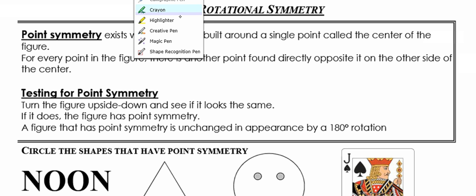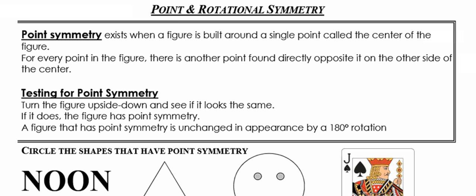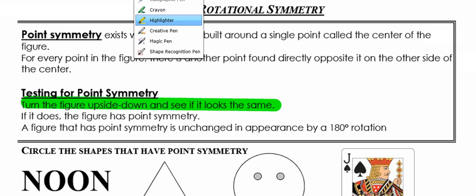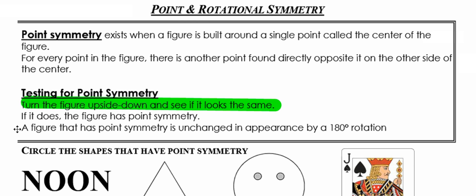How can you tell when a figure has point symmetry? If it's exactly the same upside down as it is right side up, then it has point symmetry. If it doesn't look exactly the same upside down as it is right side up, then there exists no point symmetry. Another fancy mathematical way to say it: a figure with point symmetry remains unchanged by a rotation of 180 degrees.